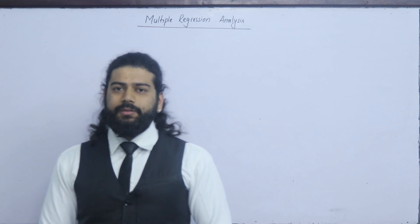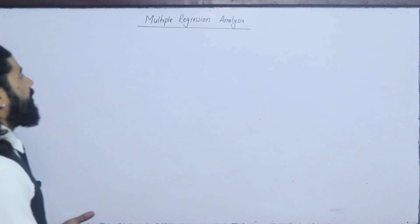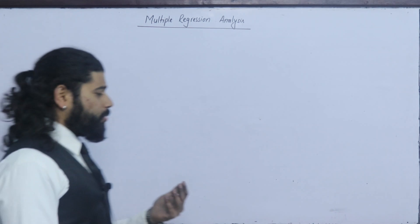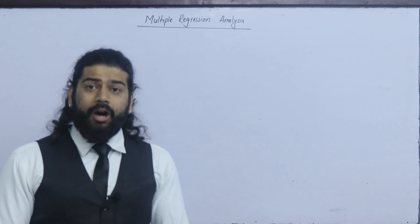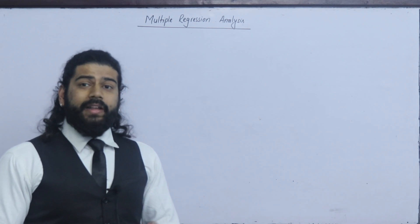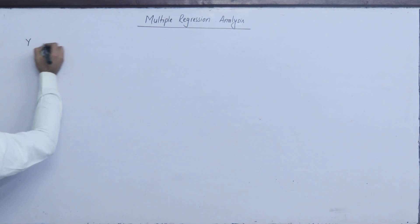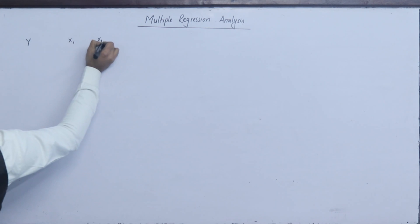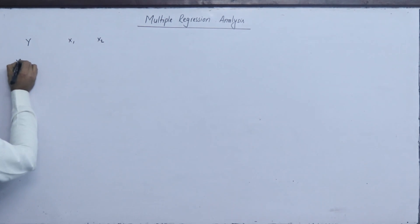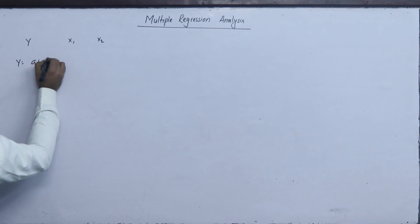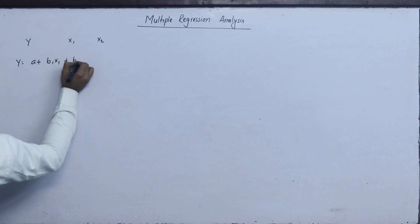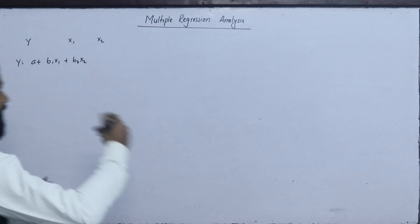I will explain what is multiple regression analysis. Regression is a straight line. Multiple means more than two variables. Suppose the variable y depends on independent variables x1 and x2. How is the relation? y equals to a plus b1 x1 plus b2 x2. This is a multiple regression equation.